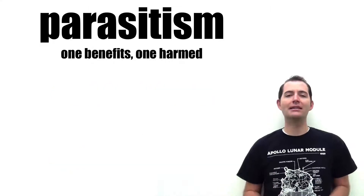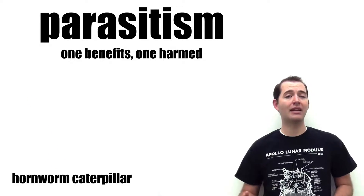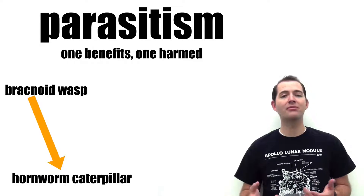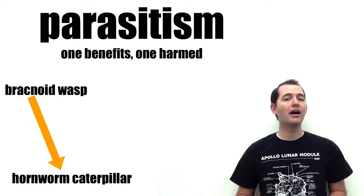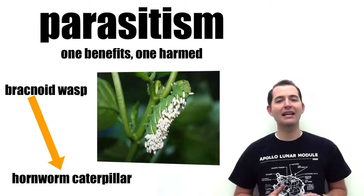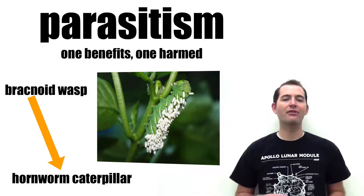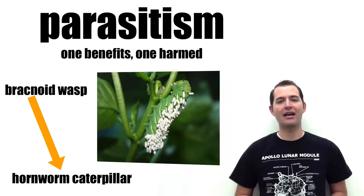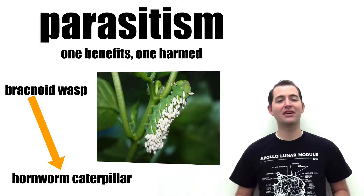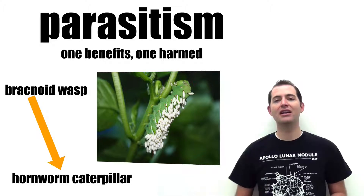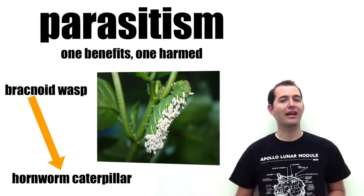One example of parasitism is between the hornworm caterpillar and the brackenoid wasp. The wasp will lay its eggs inside the body of the hornworm caterpillar, and when those eggs eventually hatch, it kills the host, or the caterpillar.